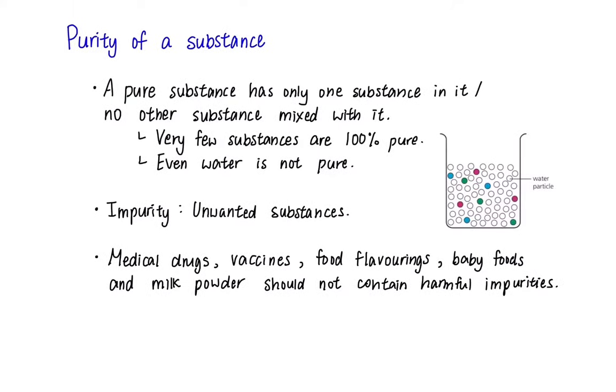Next up, we have the purity of a substance. We can say a substance is pure if it has only one substance in it. Water can be said 100% pure if it only contains water particles. However, that is not the case as even drinking water contains some minerals. Some substances may contain impurities which are the unwanted substances.